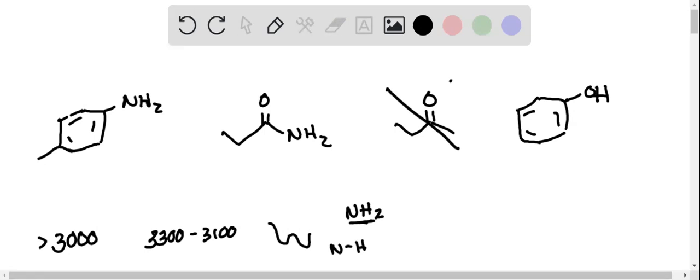Right away, we can eliminate these two options. Now we need to look at what is the difference between these two. Here, we're going to have carbon-carbon double bonding and SP2 carbon-hydrogen bonding, whereas over here, we're going to have a carbonyl and only SP3 carbon-hydrogen bonding.